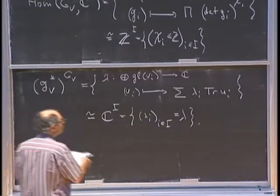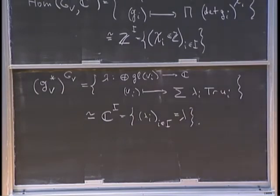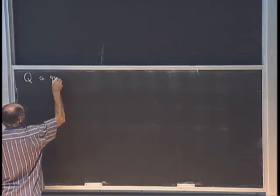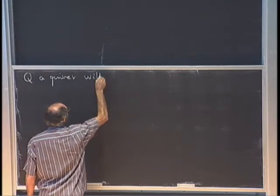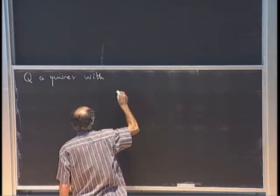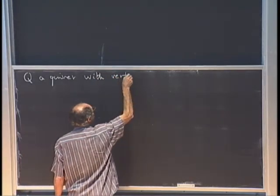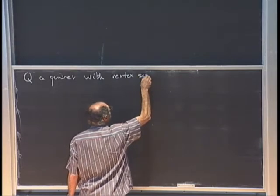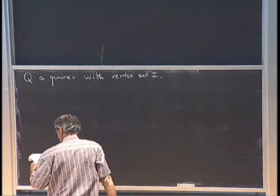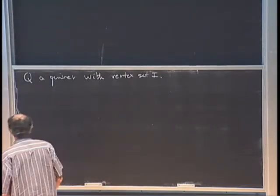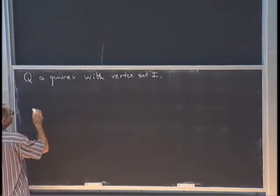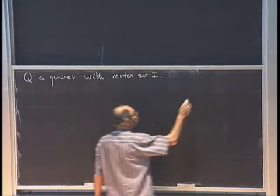Now we actually have to work with a quiver Q with vertex set I. In order to study the moment map, it is convenient to introduce the opposite quiver, which has all arrows of the original quiver reversed.